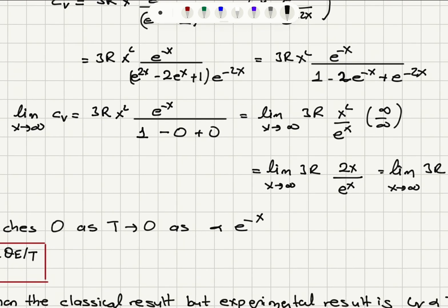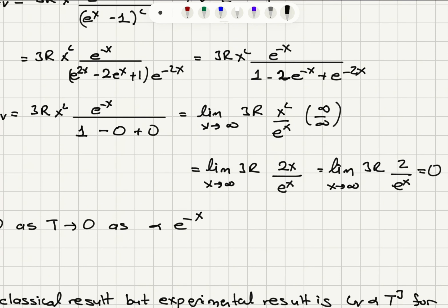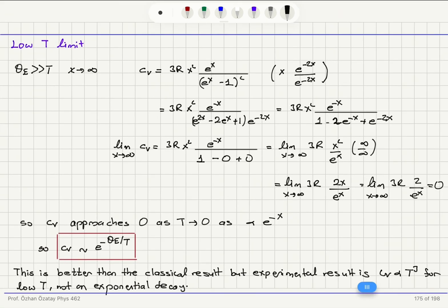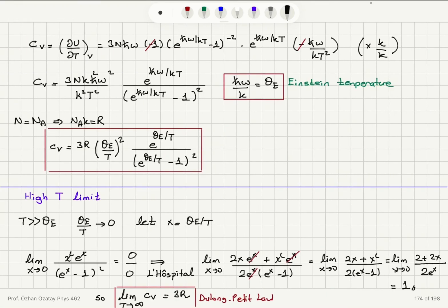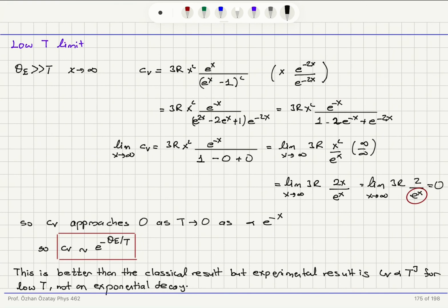So Cv approaches zero as temperature goes to zero. The functional form of the approach is dominated by e^(−x) = e^(−θ_E/T), an exponential decay. In the high-temperature limit, Cv equals the constant 3R (Dulong-Petit). In the low-temperature limit, Cv goes to zero exponentially as e^(−θ_E/T).